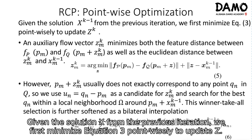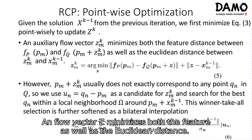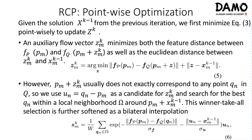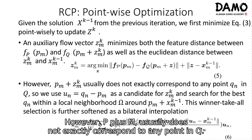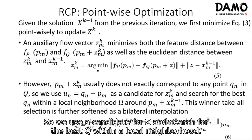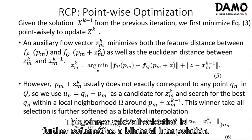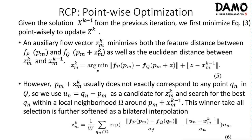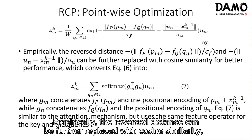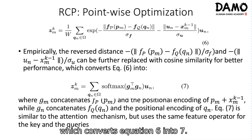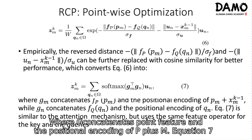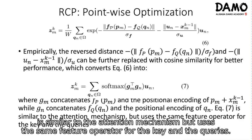Given the solution X from the previous iteration, we first minimize equation 3 point-wise to update Z. The flow vector Z minimizes both the feature and the Euclidean distance. However, P plus M usually does not exactly correspond to any point in Q, so we use a candidate for Z and search for the best Q within a local neighborhood. This winner-take-all selection is further softened as a bilateral interpolation. Empirically, the reversed distance can be replaced with cosine similarity, converting equation 6 into equation 7, where G concatenates point features and the positional encoding of P plus M. Equation 7 is similar to the attention mechanism but uses the same feature operator for the key and queries.